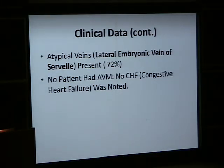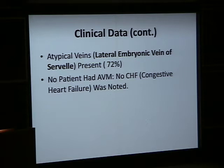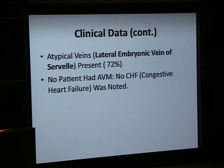The typical veins we see in this syndrome — the most salient of which is the lateral embryonic vein of the thigh. When you examine a patient with KTS, on the lateral aspect of the leg there is a prominent vein called the lateral embryonic vein.